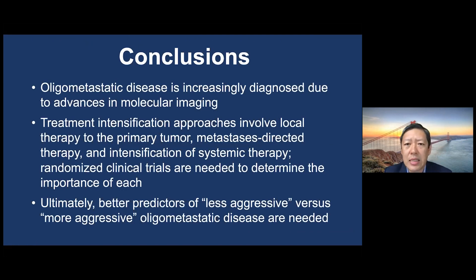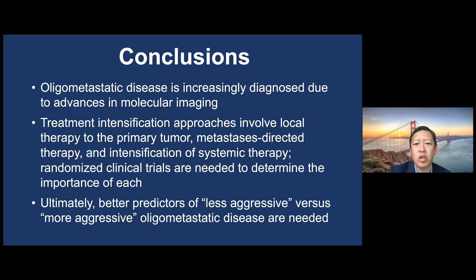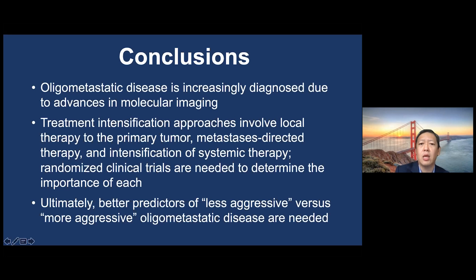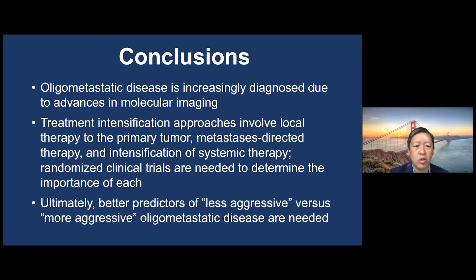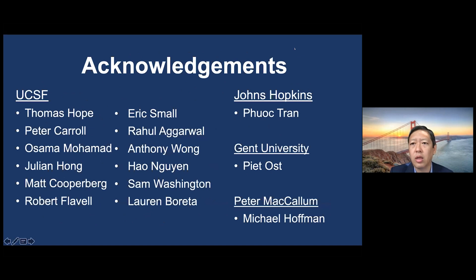In conclusion, oligometastatic disease is increasingly diagnosed due to advances in molecular imaging. Treatment intensification approaches involve local therapy to the primary tumor, metastasis-directed therapy, and intensification of systemic therapy — and we need randomized clinical trials to determine the importance of each. We already have a large randomized trial supporting radiation to the prostate in oligometastatic disease, and ongoing studies address other forms of treatment intensification. Ultimately, better predictors of less versus more aggressive oligometastatic disease are needed, and that is where we are currently focusing our efforts.